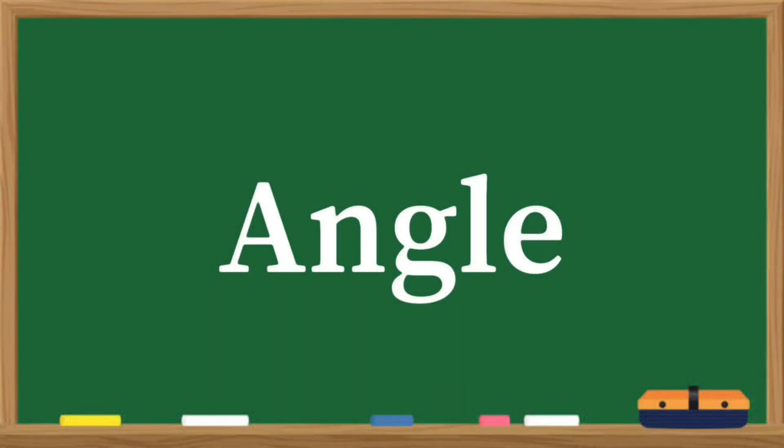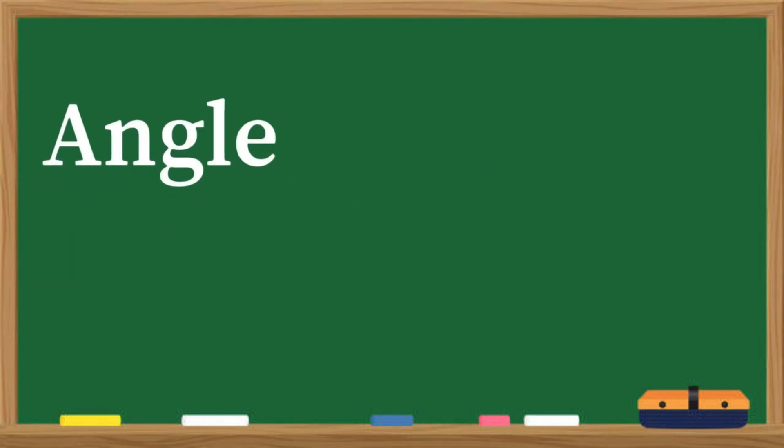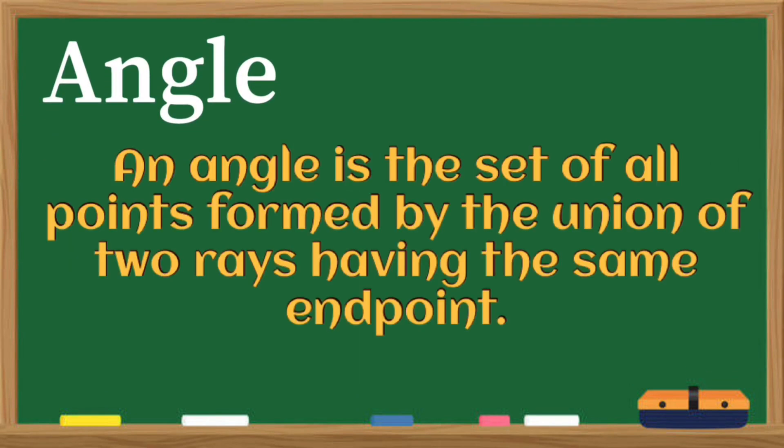Now, let us define first what is an angle. An angle is the set of all points formed by the union of two rays having the same end point.